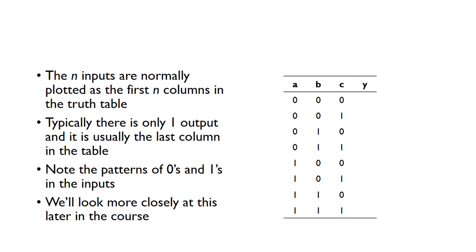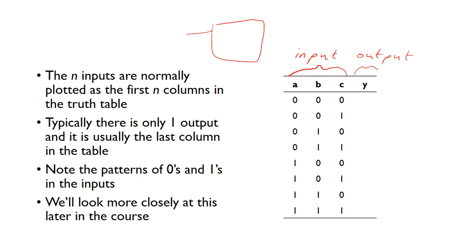This truth table here is for a three-input combinational logic circuit. We normally put the first n columns as the inputs, so we can see A to C are our inputs, and then Y is our output. For this example we would have some kind of combinational logic circuit with three inputs A, B and C, and a single output Y.